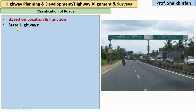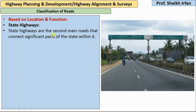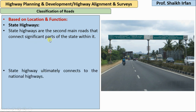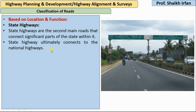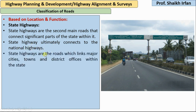The second type of roads based on location and function are state highways. State highways are the second main roads that connect significant parts of the state within it, and they ultimately connect to the national highways. They link major cities, towns, and district offices within the state.